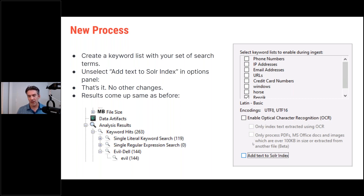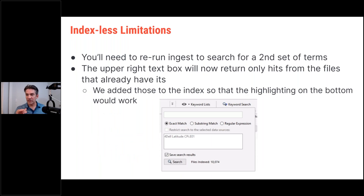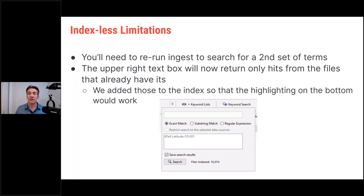The main change is this checkbox: check it to add text to the index, uncheck it to do the index-less search. There are a couple of limitations though. After your first ingest, if you later realize you want to search for additional terms A, B, and C, you have to re-run. You go back in, make a list with those terms, check that list, re-run with all other modules disabled — just running keyword search — make sure it's still not adding to the index, and it will run through again. It'll take the same amount of time as the first time.